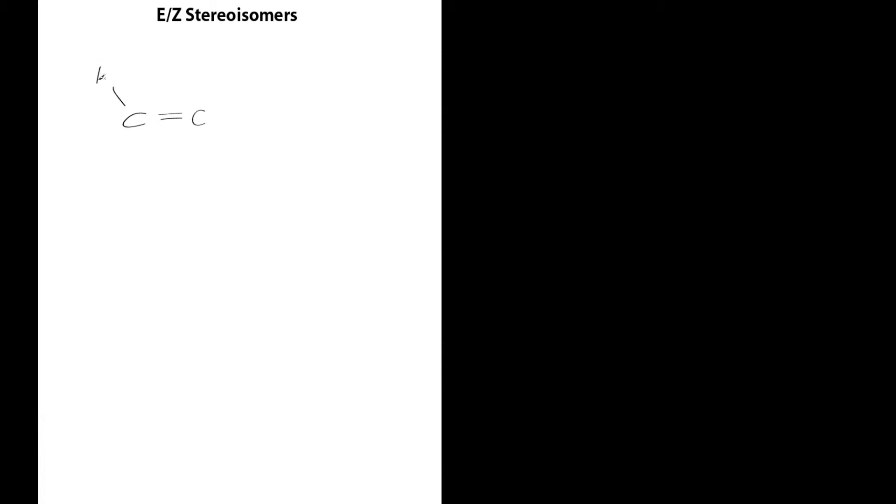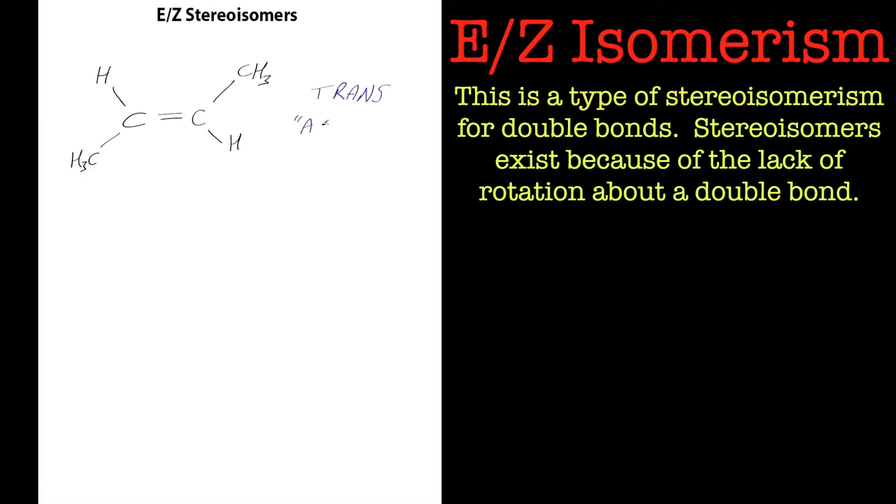Hello and welcome to this tutorial on E and Z stereoisomers. Now I know a lot of you will be familiar with cis and trans nomenclature for naming the configuration around a double bond. But you'll find that the E and Z nomenclature is far superior.